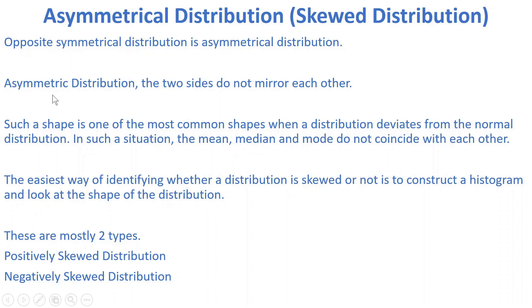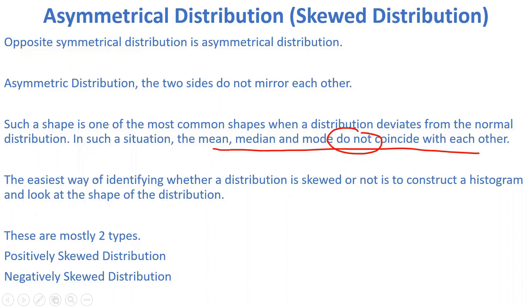In asymmetrical distribution, the two sides do not mirror each other. Also, unlike symmetrical distribution where mean, median, and mode coincide with each other, here they do not coincide. The easiest way to identify whether a distribution is skewed or not is to construct a histogram and observe the shape of the distribution.